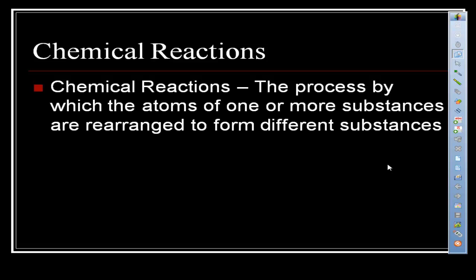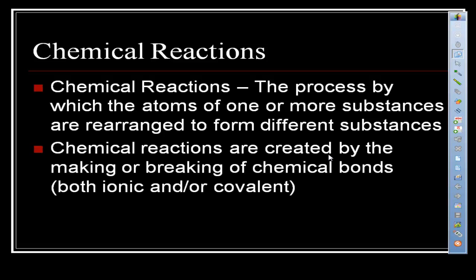A chemical reaction is the process by which the atoms of one or more substances are rearranged to form different substances. Chemical reactions are created by the making or breaking of chemical bonds — both ionic and covalent bonds.